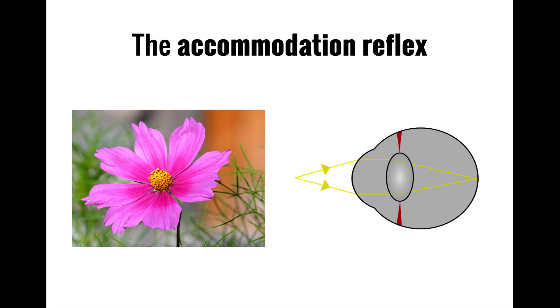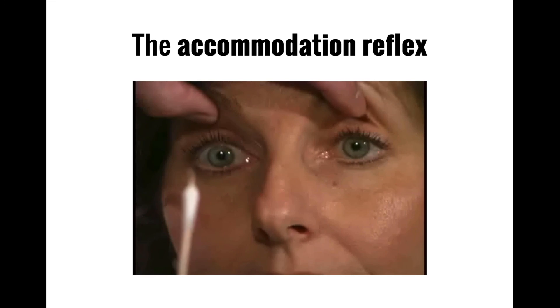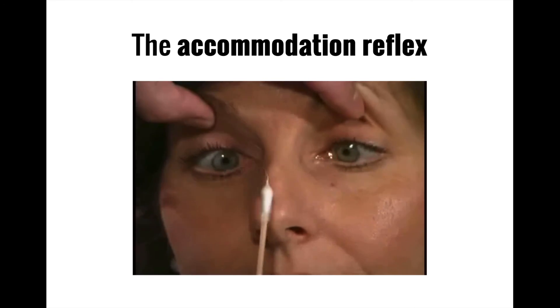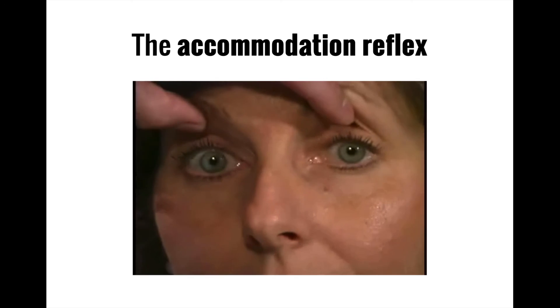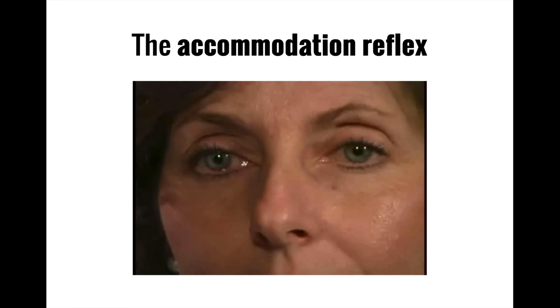This process can be tested clinically by placing a finger or other object close to the space between the patient's eyes and observing for pupillary constriction. Watch in this video how the patient's pupils constrict as the object comes closer, then dilate again as the object is moved away. This is a normal process, and if it is defective or absent, this may suggest damage to some or part of the visual pathway.